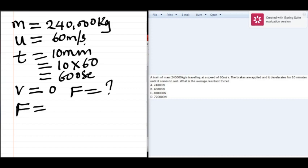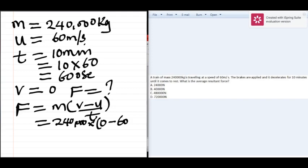Now we substitute the values. The value for the mass is 240,000. The final velocity is zero, initial velocity is 60.